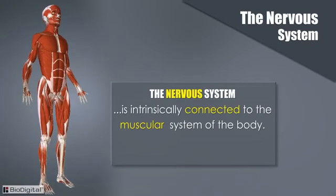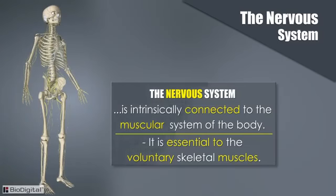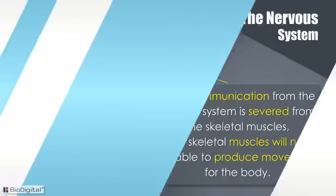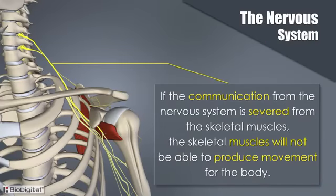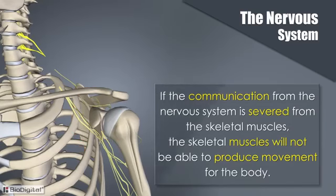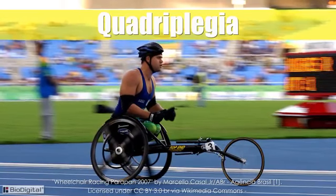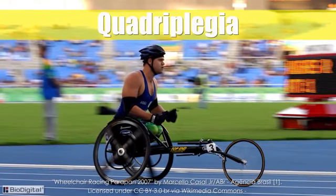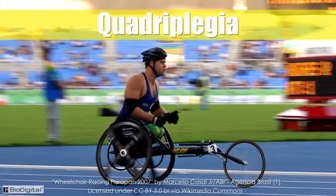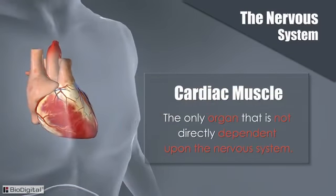While not technically part of the same system, the nervous system is intrinsically connected to the muscular system. It is essential to the voluntary skeletal muscles — if the communication from the nervous system is severed from the skeletal muscles, they will not be able to produce movement, and the body enters a state of paralysis known as quadriplegia. The only organ not directly dependent upon the nervous system is the cardiac, or heart, muscle.